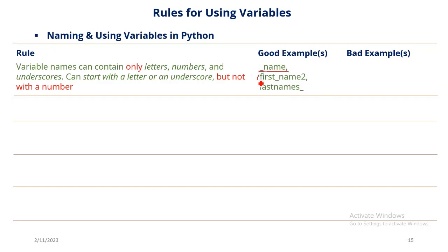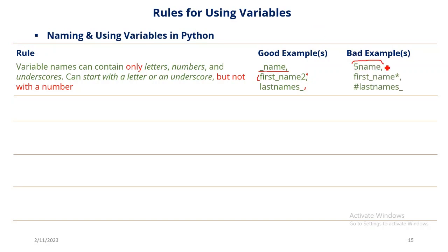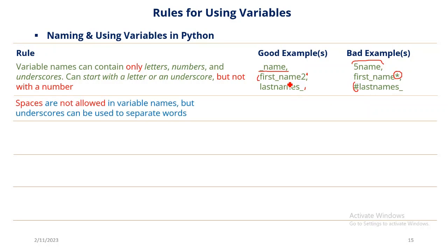Bad examples: 5name — this will flag an error. first_name* — the asterisk is a special character not allowed. last_name@ — also a special character. Never do those. Another rule: spaces are not allowed in variable names. But as you can see, you can use an underscore to separate words. Good examples: greeting_message, _greeting_message — both are good. Bad example: 'greeting message' with a space — Python does not understand that.